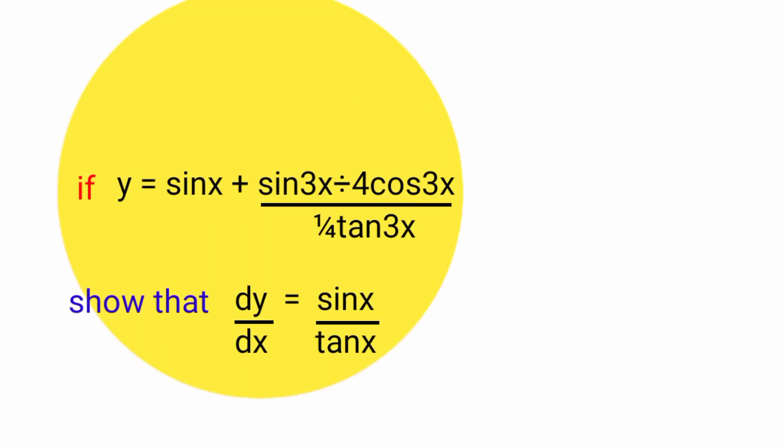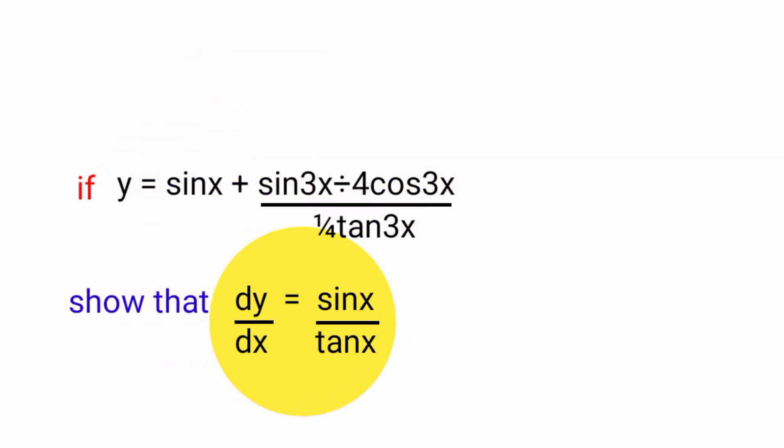If y equals sin x plus sin 3x divided by 4 cos 3x, all over 1/4 tan x, is it possible that the differential of y with respect to x equals sin x over tan x? Well, let's check it out.